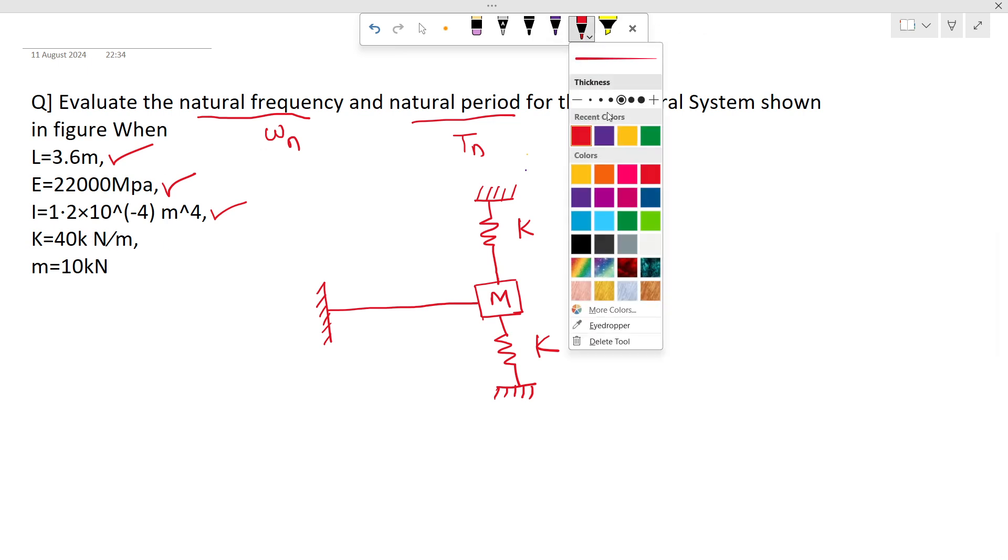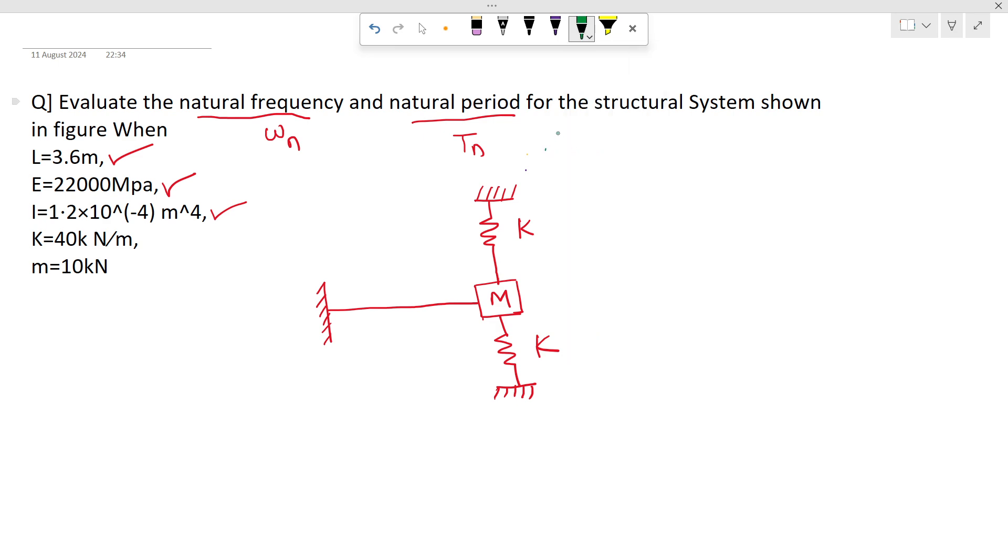The value of spring stiffness K is given as 40 kN per meter, and the value of this mass is given as 10 kN.